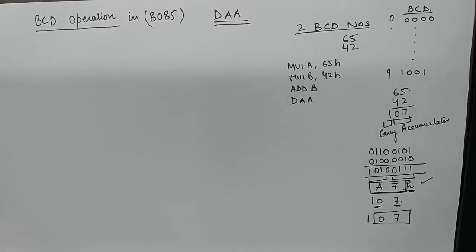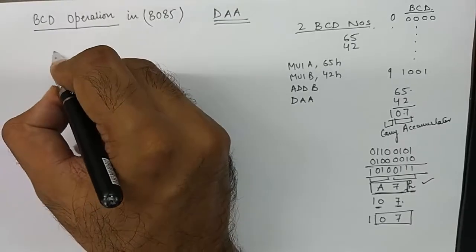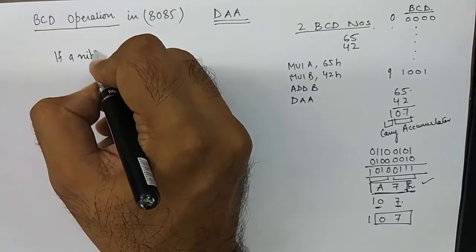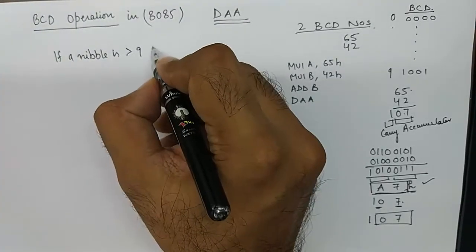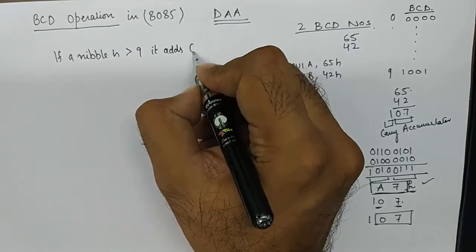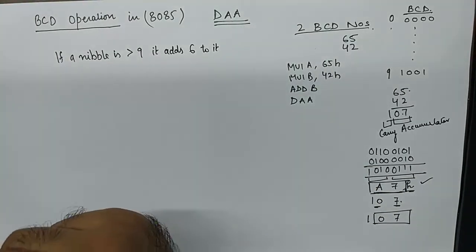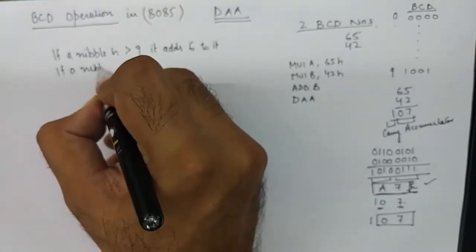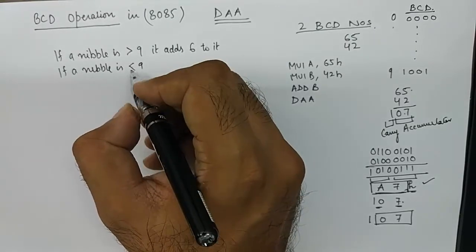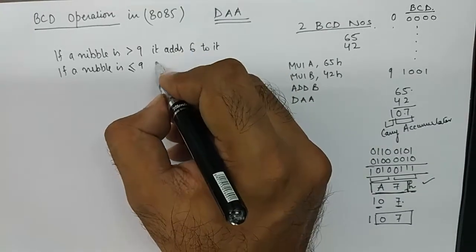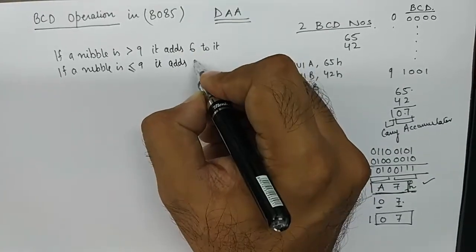What does DAA internally do in order to correct or adjust any number into correct BCD notational format? What DAA does is: if a nibble is greater than 9, it adds 6 to it. If a nibble is less than or equal to 9, it adds 0 to it.